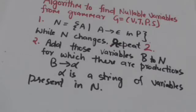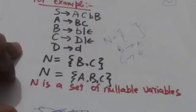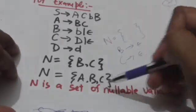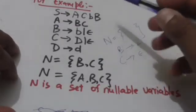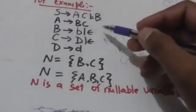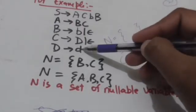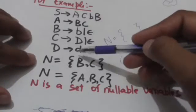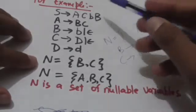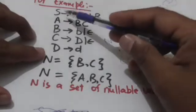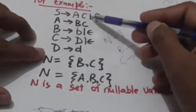The set N obtained at the end will contain all the nullable variables of grammar G. This will be more clear with an example. Suppose there is a grammar G whose productions are given to us, and we have to find the nullable variables of this grammar G.